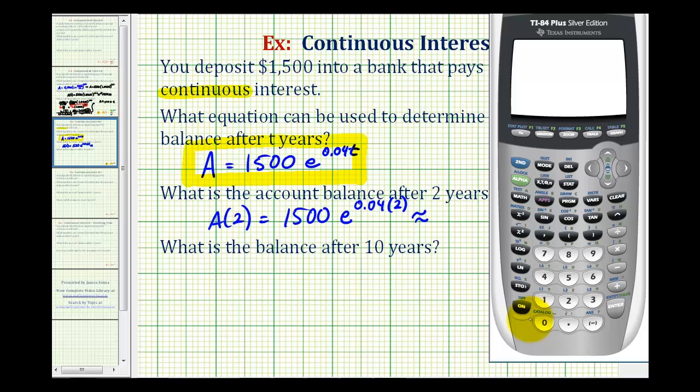So we'd have 1,500 times E raised to the power of 0.04 times 2. Now we'll go to the calculator and determine this value. If we press second natural log, it brings up E raised to the power of. We just type in 0.04 times 2, close parenthesis, and the account balance would be approximately $1,624.93.